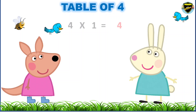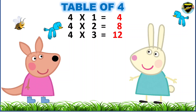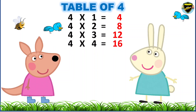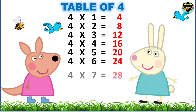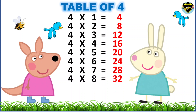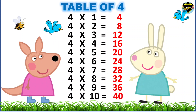Now, let's learn the table of 4. 4 1s are 4. 4 2s are 8. 4 3s are 12. 4 4s are 16. 4 5s are 20. 4 6s are 24. 4 7s are 28. 4 8s are 32. 4 9s are 36. 4 10s are 40.